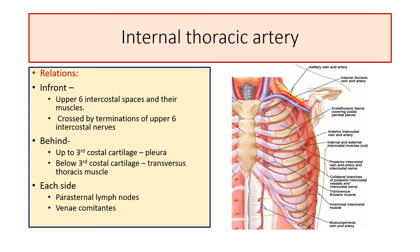Regarding the relations of the internal thoracic artery: anteriorly, it is related to the upper six intercostal spaces and their muscles, and it is crossed by the terminations of the upper six intercostal nerves, as seen in this picture. Posteriorly, it is related to the pleura up to the third costal cartilage, and below the third costal cartilage the transverse thoracic muscle intervenes between it and the pleura.